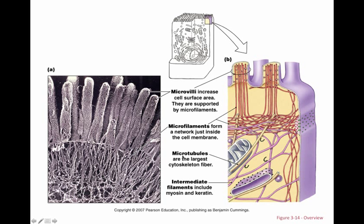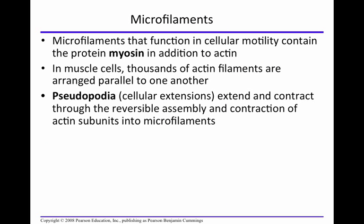Microtubules are the largest cytoskeleton fiber. This diagram also shows intermediate fibers — myosin and keratin are intermediate fibers. Microfilaments function in cell motility. You'll find myosin and actin working together in concert, especially in contraction of muscle cells. Pseudopodia extend and contract using microfilaments — these are examples of how microfilaments are used for cell motility.